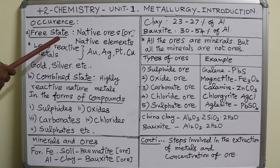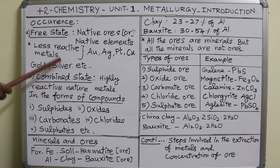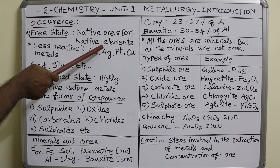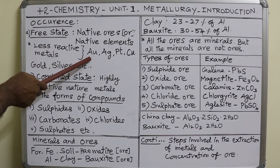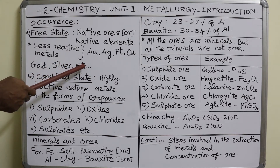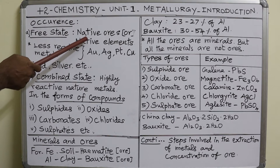In this introduction, we must see how metals are available on the Earth's crust. They are available in two different ways: the first is the free state and the second is the combined state. In the free state, metals are called native ores or native elements. These are very less reactive metals — for example, gold, silver, platinum, and copper — which do not react easily with other elements.